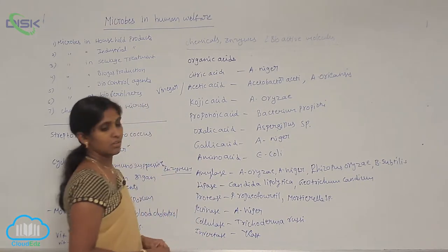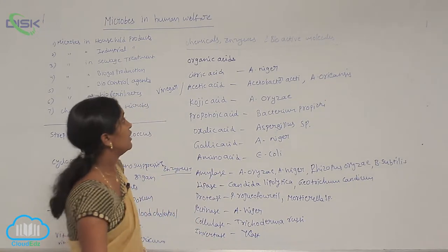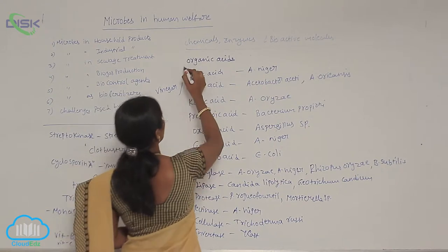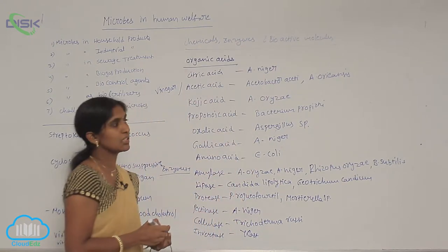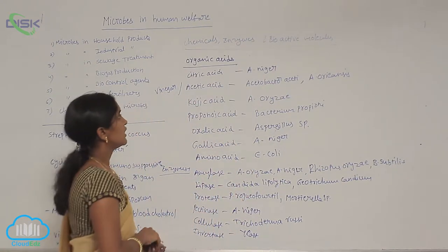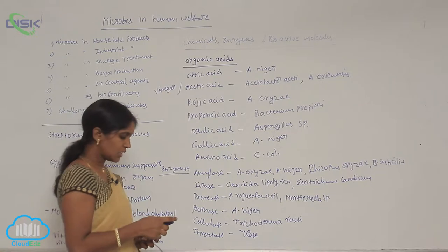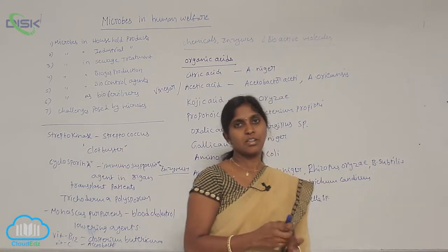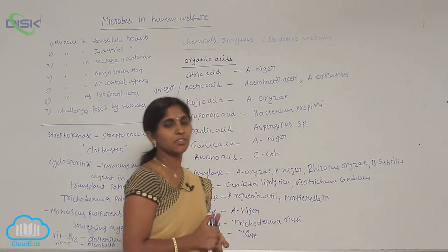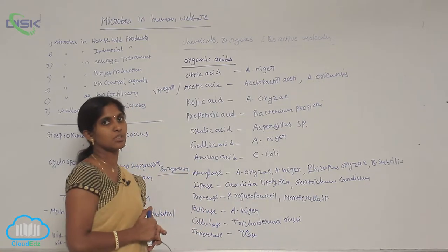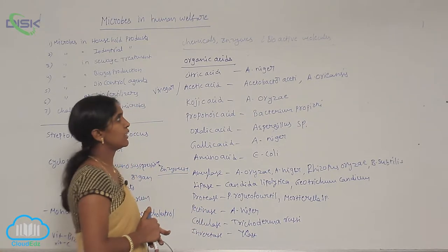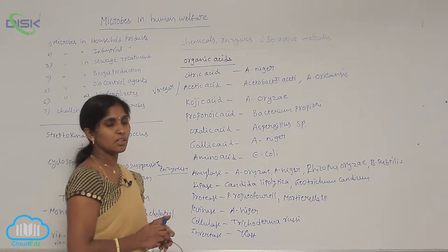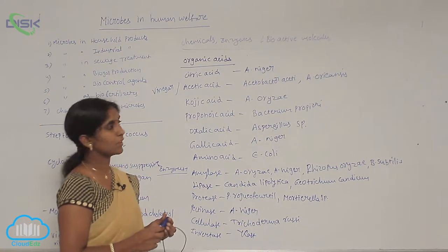Organic acids extracted from bacterial cultures include citric acid. Citric acid is found in citrus fruits and can be crystallized from them, but commercially it is prepared using the fungi Aspergillus niger.